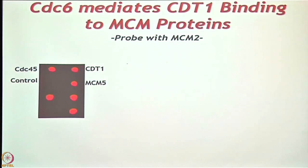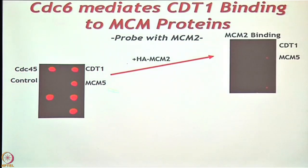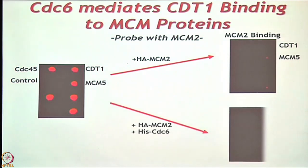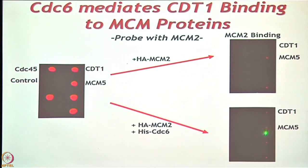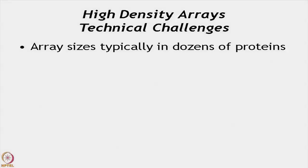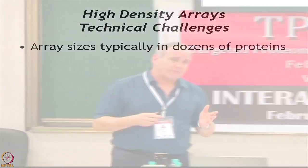We probed MCM2 against CDT1 either with or without CDC6 as the bridge protein. Without CDC6 you don't see any CDT1 binding, but you do see the positive control MCM5. When you add MCM2 plus CDC6, you can now observe CDT1 binding, demonstrating that CDC6 acts as a bridge connecting CDT1 to the MCM complex.